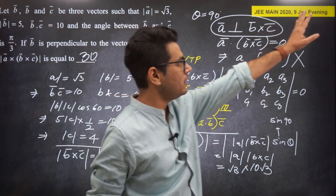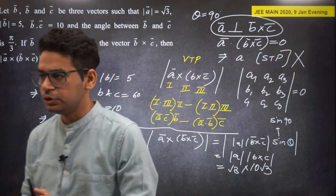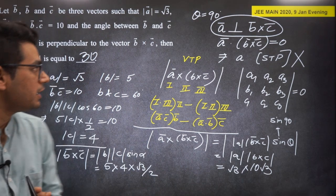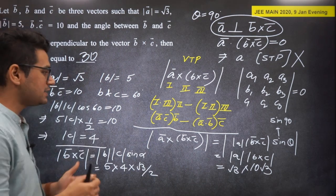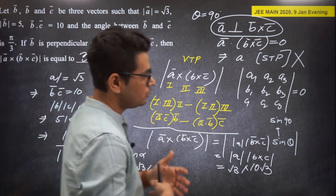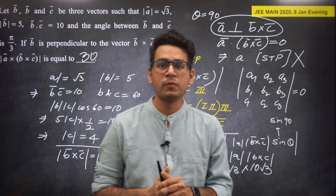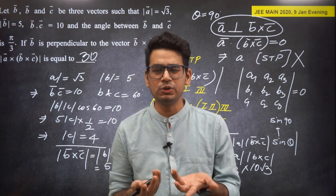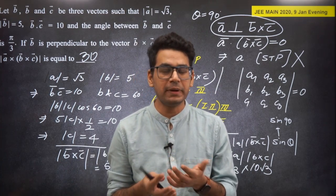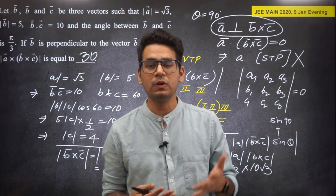|B×C| = |B|*|C|*sin(60°) = 5 * 4 * (√3/2) = 10√3. So |A × (B×C)| = √3 * 10√3 = 30. The answer is 30.